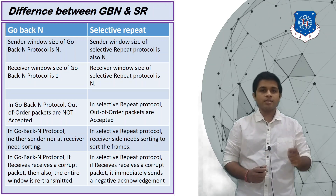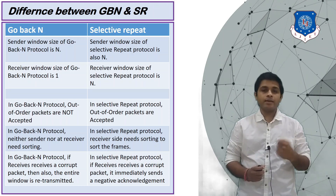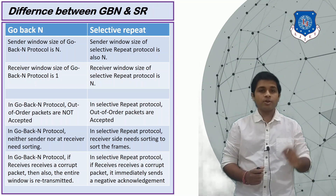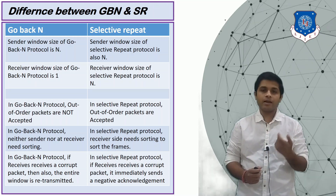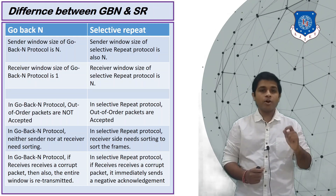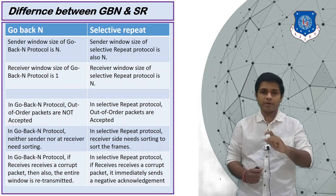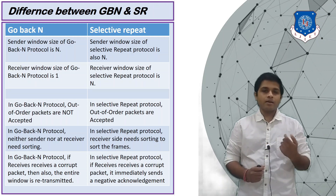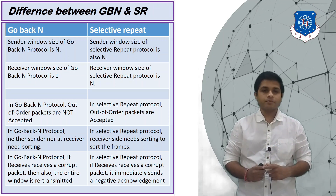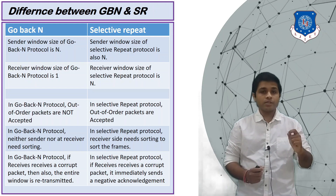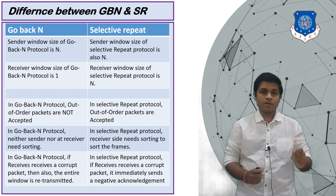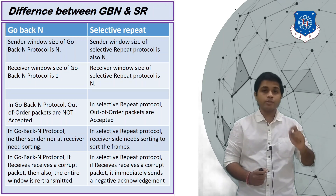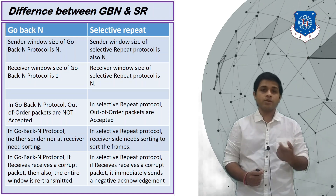Let's compare Go-Back-N and Selective Repeat. In Selective Repeat, sender's window and receiver's window are both N. In Go-Back-N, the sender's window is N but the receiver's window is 1. In Go-Back-N, the receiver does not accept out-of-order packets, but in Selective Repeat it does. In Go-Back-N neither sender nor receiver needs sorting, because the receiver only accepts the packet it is expecting. In Selective Repeat, the receiver can receive out-of-order packets, but after receiving them they need to be sorted. In Go-Back-N, corrupted packets are silently discarded, but in Selective Repeat the receiver also informs the sender via a negative acknowledgement.